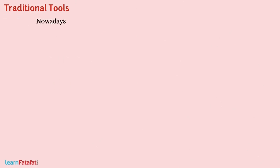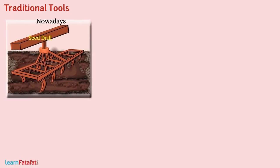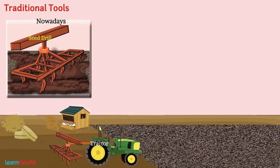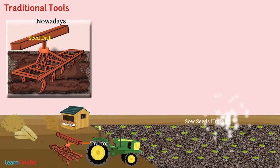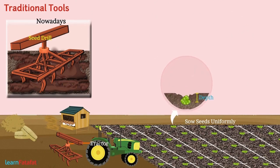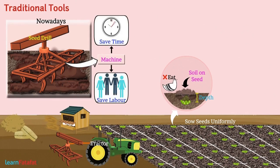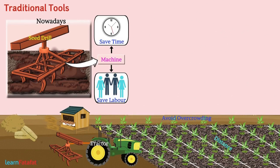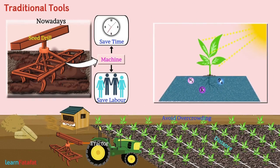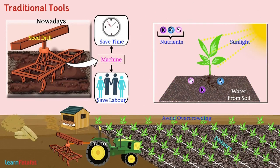Nowadays, we use a more improved tool — the seed drill — which is used for sowing with the help of a tractor. With this tool, it is possible to sow seeds uniformly at proper distance and depth. It also helps to cover the seeds with soil so that birds cannot eat them. Using machines for sowing saves a lot of time and labor. Keeping distance between seeds helps avoid overcrowding, allowing plants to get sufficient sunlight, nutrients, and water from soil.